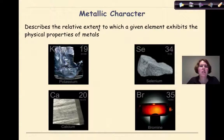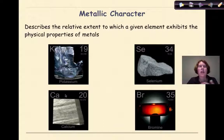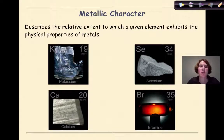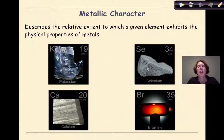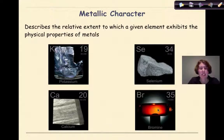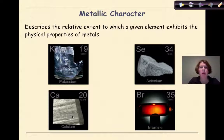Now let's talk about the concept of metallic character. Metallic character describes the relative extent to which a given element exhibits the physical properties of metals. For example, potassium and calcium have luster, they are malleable, they are ductile, they conduct electricity — you can pound them into thin sheets or draw them into wires. Potassium is so soft that you could cut it with a knife. Compare that to selenium, a non-metal: if you hit it with a hammer it would shatter — it's brittle, lacks luster, and cannot conduct electricity. Bromine is a non-metal that's a gas at room temperature, not malleable, not ductile, and won't conduct electricity. So selenium and bromine would have low metallic character, while potassium and calcium would have high metallic character.